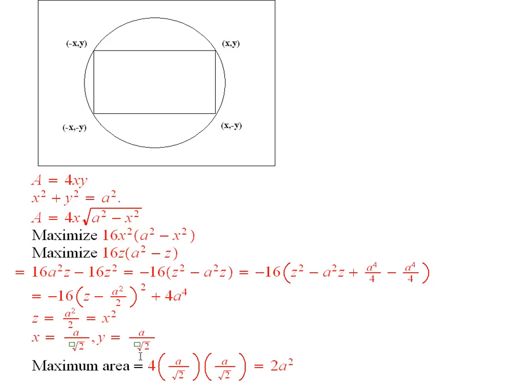And so the maximum area should be 4 times a over the square root of 2 times a over the square root of 2, and that's just 2a squared.